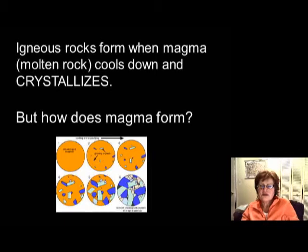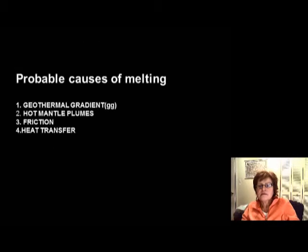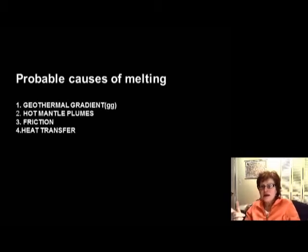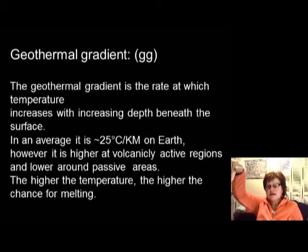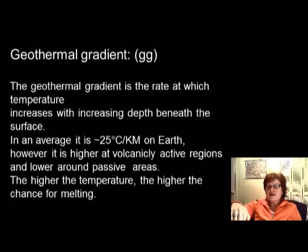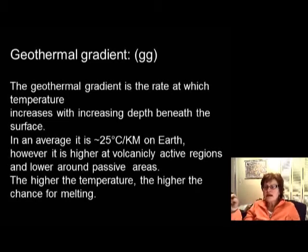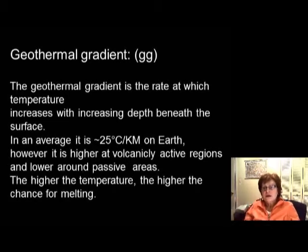You can see how crystallization happened in these figures right here. But the question is, how does magma form? We have a couple of probable causes: one is the geothermal gradient, we're going to talk about hot mantle plumes, friction, and heat transfer. The geothermal gradient is basically the rate at which temperature increases as we go down inside the Earth. If you measure it at many locations and average the results, we get the average geothermal gradient.